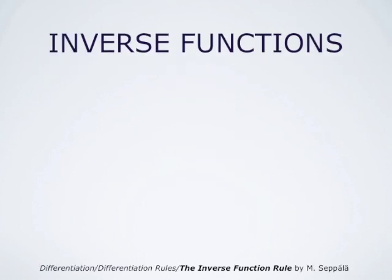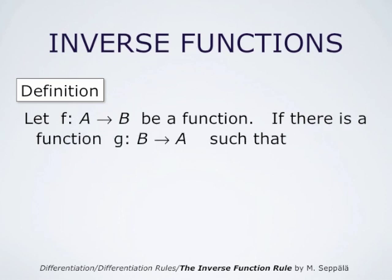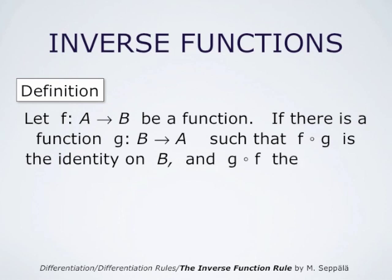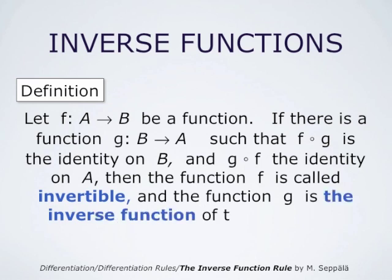The formal definition of inverse functions is the following. Let f from A to B be a function. If there is a function g from B to A such that f composed with g is the identity on B, and g composed with f is the identity on A, then the function f is called invertible and the function g is the inverse function of f.